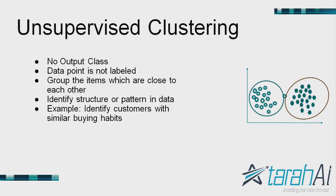Let us look at clustering. We all know the basic difference between clustering and classification — clustering is unsupervised, no output variable. You take the raw data and try to bucket it into groups based on similarity of the data within the same cluster and heterogeneity with data from other clusters.